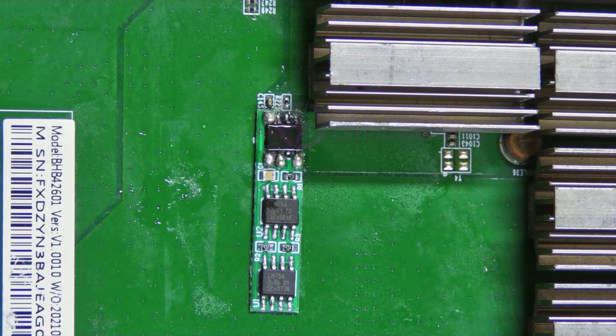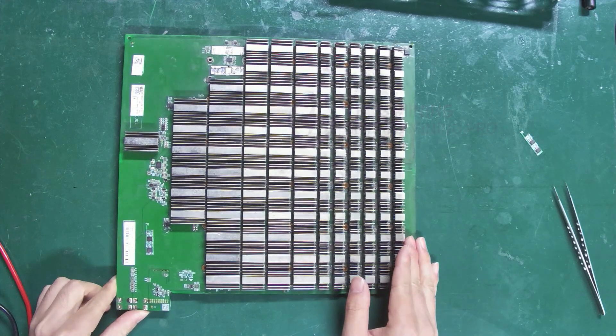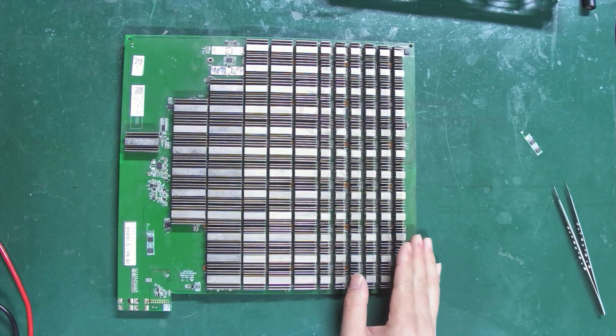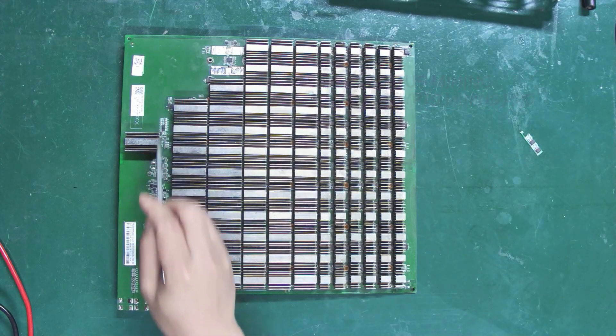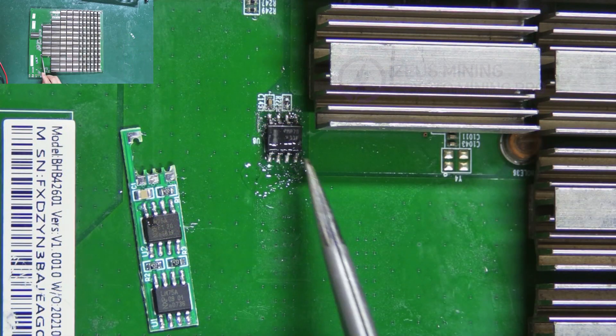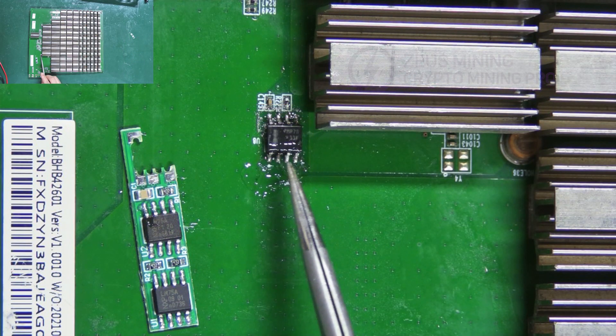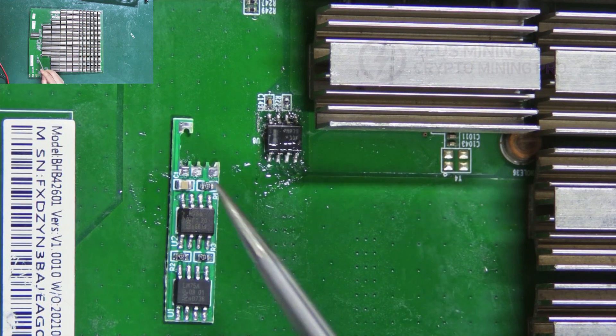Next I'll show you exactly how to solder it. We can choose to solder it to any of the temperature sensing chips at the outlet. Today I'm soldering it here on U8. When installing, pay attention to the orientation of the module.